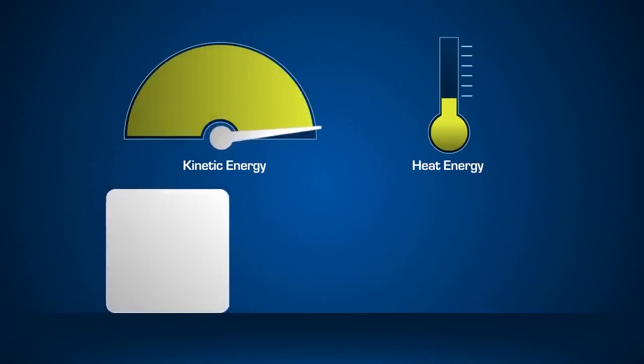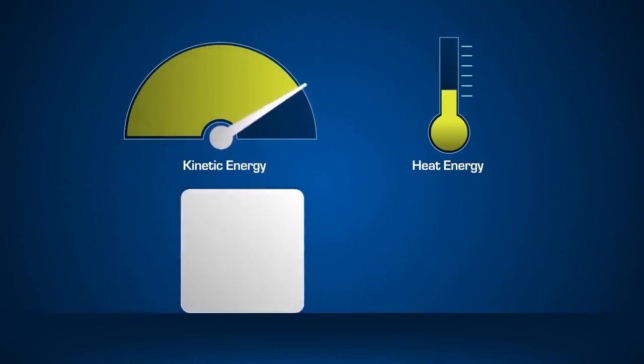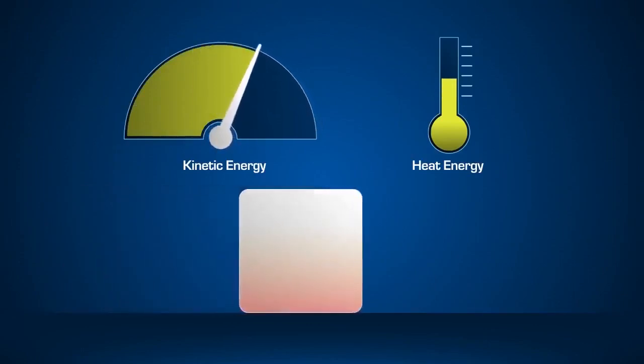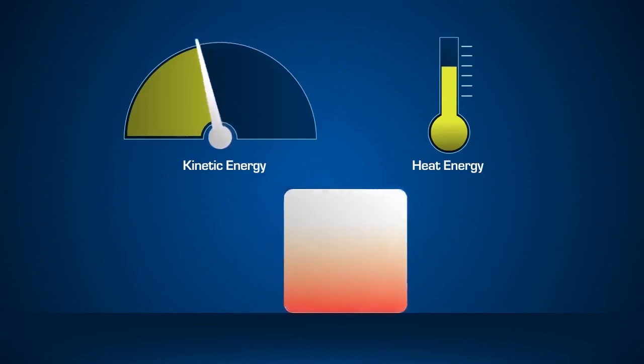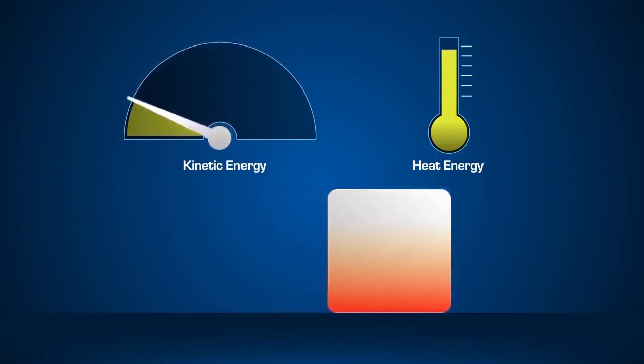A heavier or faster moving block possesses more kinetic energy. This means that more kinetic energy is converted to heat as friction slows the object.